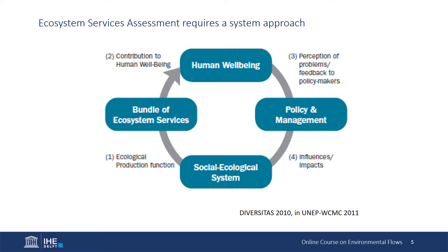The assessment of ecosystem services requires a system approach to understand the interactions among different societal groups and the environment. These together define the socio-ecological system. Understanding the processes that determine ecosystem dynamics and the supply of services should be complemented with understanding how people use and value the services individually and as bundles or groups of services. However, different groups of people perceive and use these services in different ways, and how they use them influences the ability of other users to benefit from the same or other services. If the consequences are negative, this might lead to conflicts.